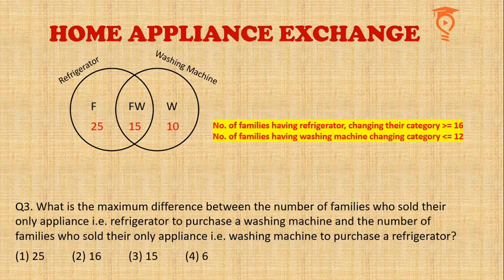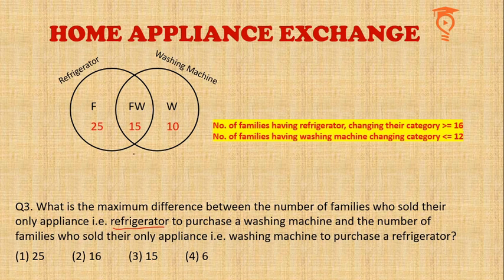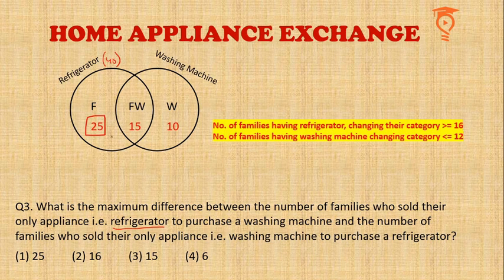Going to the third and last question: what is the maximum difference between the number of families who sold their only appliance — refrigerator — to purchase a washing machine, and the number of families who sold their only washing machine? We want this difference to be maximum. Among the 40 refrigerator families we could change all 40, but here we are talking only about the 25 families in the refrigerator-only category and the 10 in the washing-machine-only category — these are the two 'only appliance' categories. We want the maximum possible difference between those who changed category among these 25 and those among these 10.